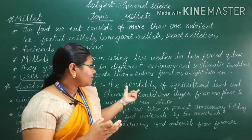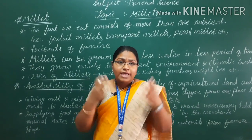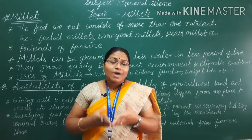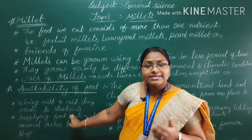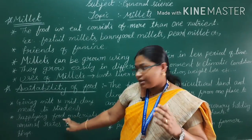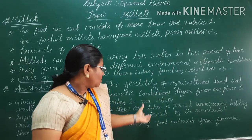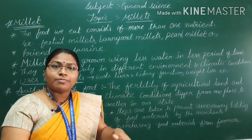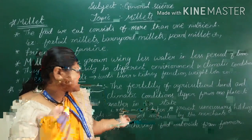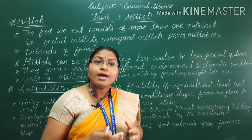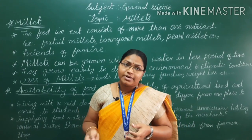Nowadays food is not available for all people in India. So the government has taken steps to reduce this problem. The government provides milk and midday meals to students in schools, supplies food materials at nominal rates through fair price shops and Raitha Bazaars, procures food materials directly from farmers and stores them in proper godowns before distributing them, and takes action to prevent unnecessary hoarding of food materials by merchants.